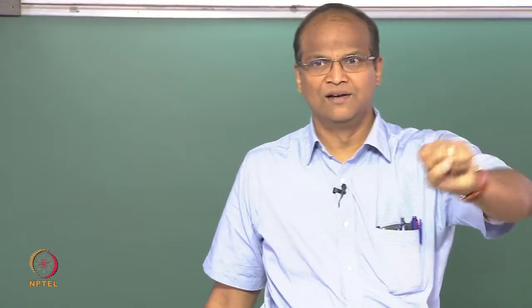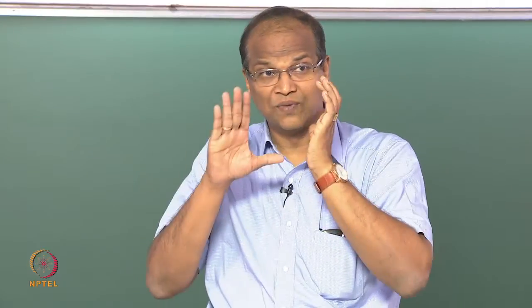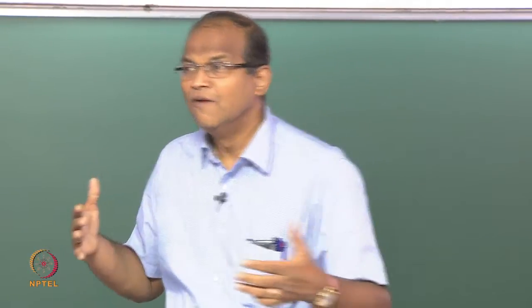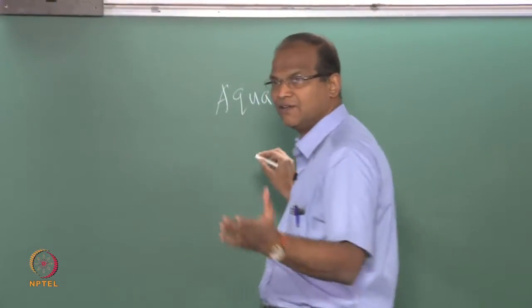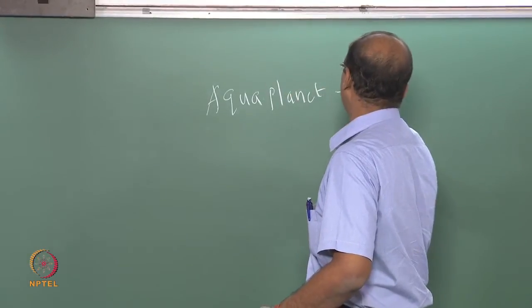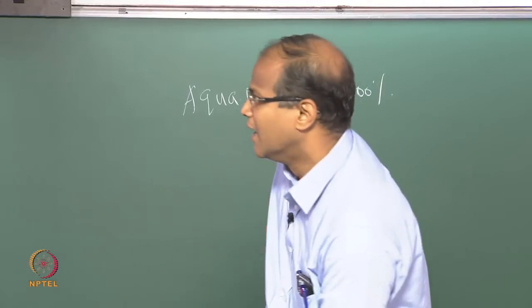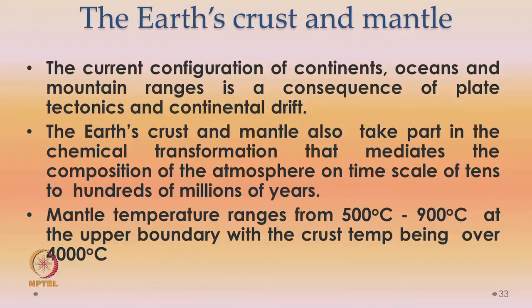Near the Euphrates river — actually Iraq — if you read Guns, Germs and Steel, you'll understand. This earth's crust and mantle have a major role in deciding the shape of the continents. Otherwise, there is something called an aqua planet — when atmospheric scientists do simulations, we can simulate what is called an aqua planet, where it is 100 percent water. But in reality it is only 72 percent aqua planet — 28 percent is land. The current configuration of continents, oceans, and mountain ranges is a consequence of plate tectonics and continental drift. Plate tectonics is a theory — now believed to be correct, but no theory is so sacrosanct that it cannot be challenged.